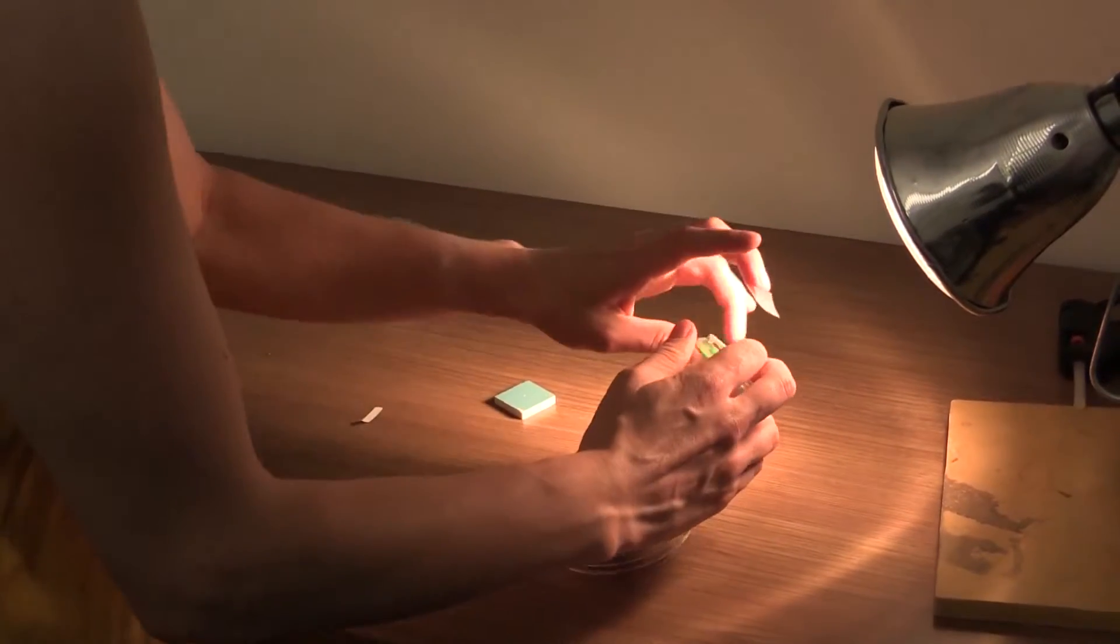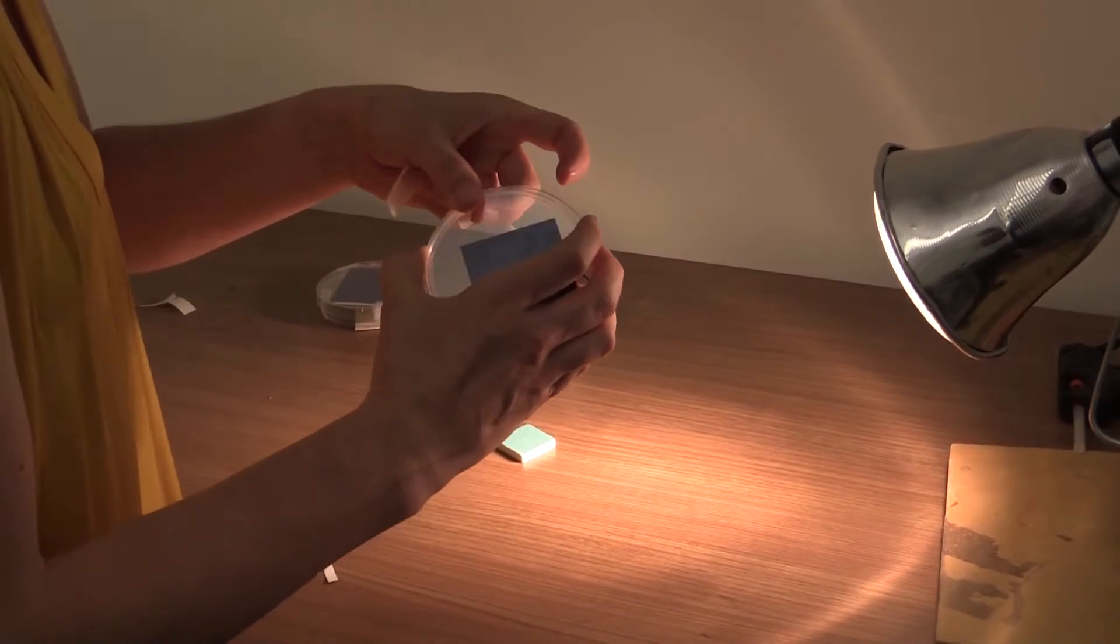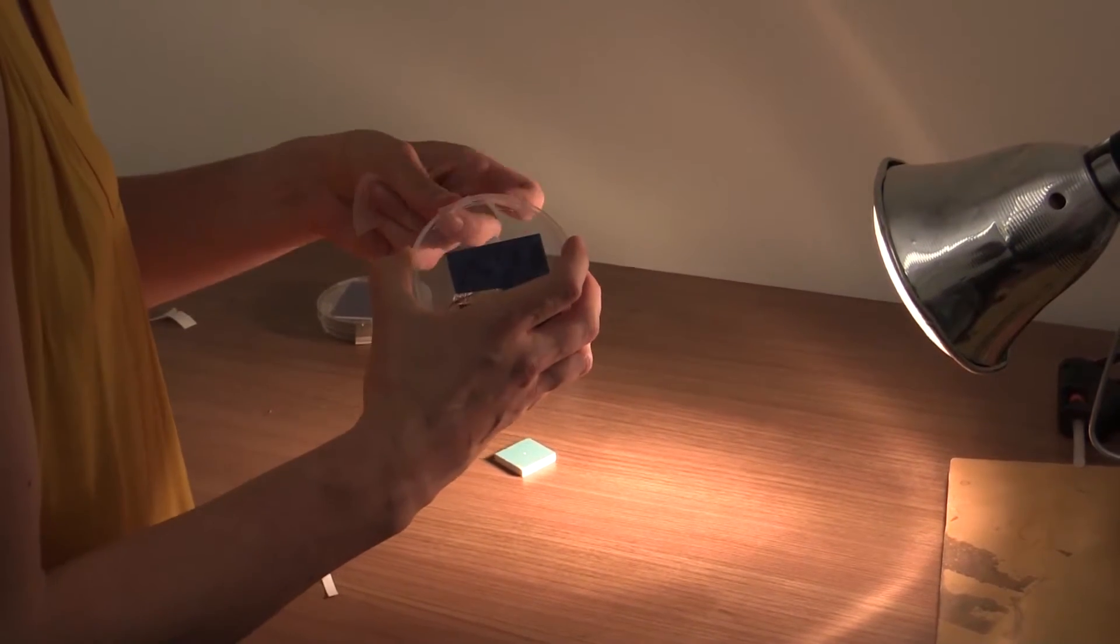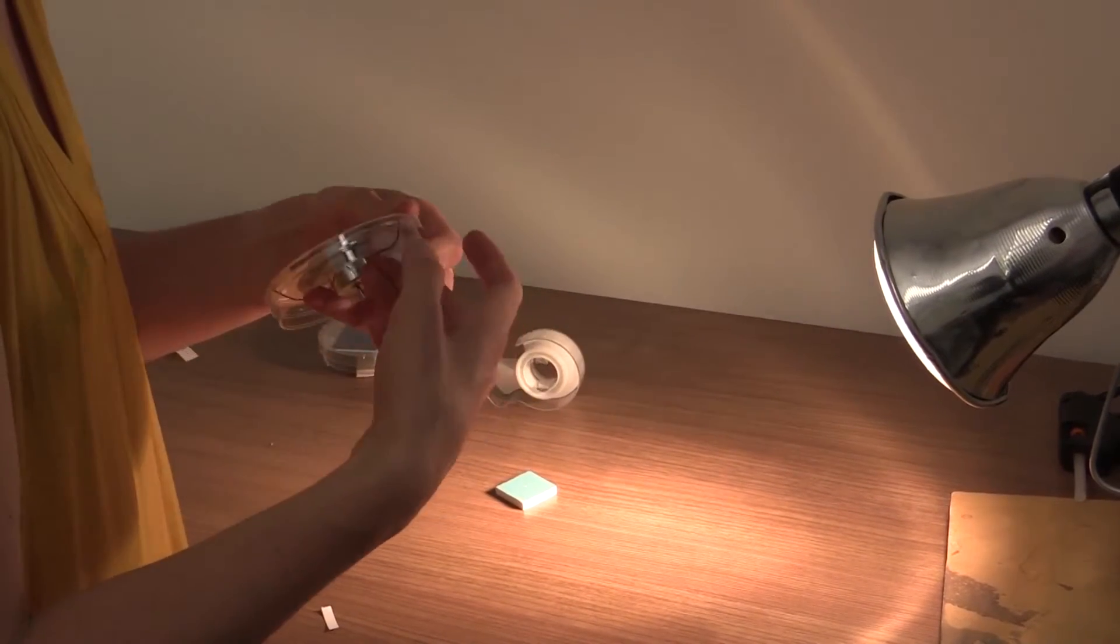Now take scotch tape and tape the petri dish together. If you have any loose wires, you can tape them to the side of the dish as well so they don't move around.